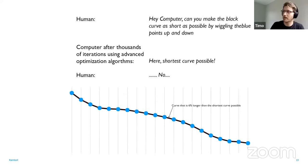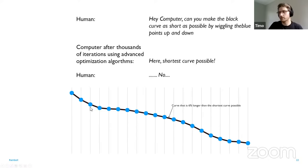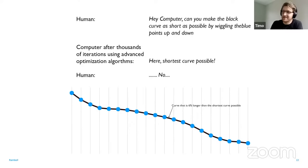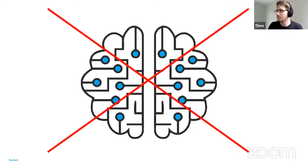As a funny example: I asked the computer to wiggle some points up and down using Galapagos in Rhino Grasshopper, trying to get a line to be as short as possible. It ran thousands of iterations moving points up and down until it arrived at what it thought was a good solution for getting a really short line. But we know as humans that the shortest line is a horizontal line — the computer doesn't know that, so it just tries and finds a decent but wrong answer. We have to use computers in a way where we keep that in mind — let's do what we're good at and let the computer do what it's good at.